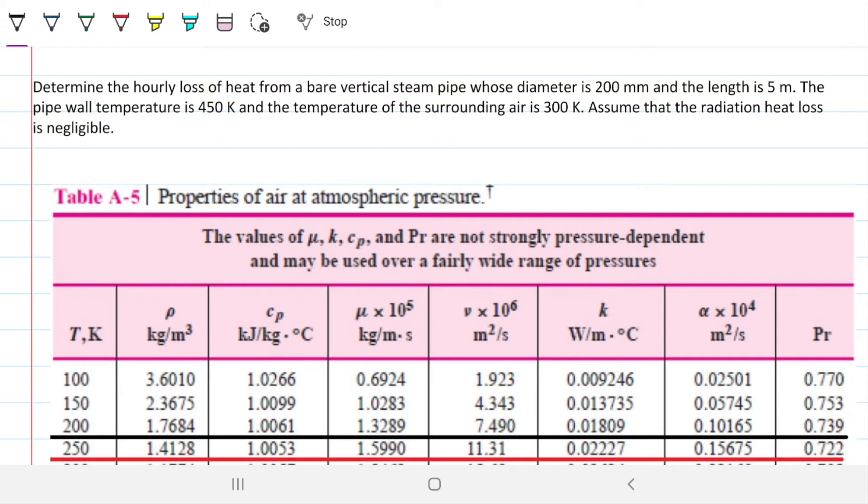Problem statement reads: Determine the hourly loss of heat from a bare vertical steam pipe whose diameter is 200 mm and the length is 5 meters. The pipe wall temperature is 450 Kelvin and the temperature of the surrounding air is 300 Kelvin. Assume that radiation heat loss is negligible.